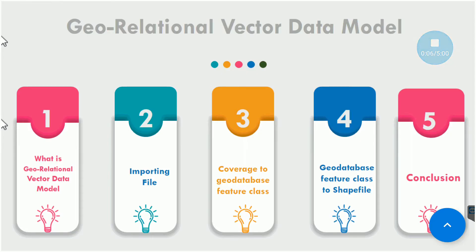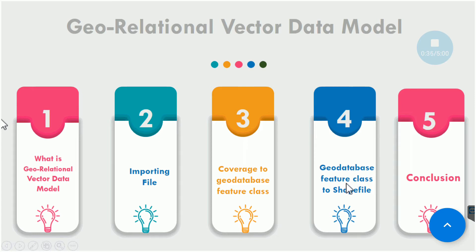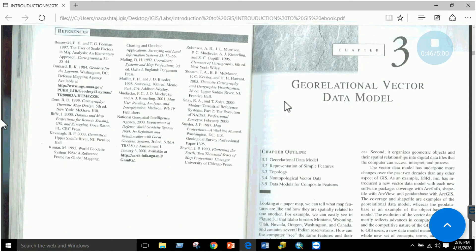We are going to cover Chapter 3 of the book, which is about the geo-relational vector data model. Our timeline for today's lab will cover: what is the geo-relational vector data model, how to import and change file formats, what is meant by a coverage file, how to convert a coverage to a geodatabase feature class, what is a feature class, and geodatabase feature class to shapefile conversion.